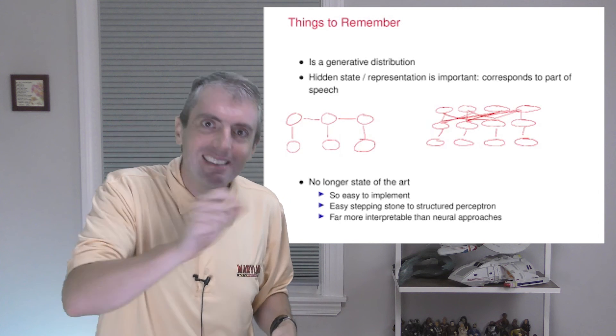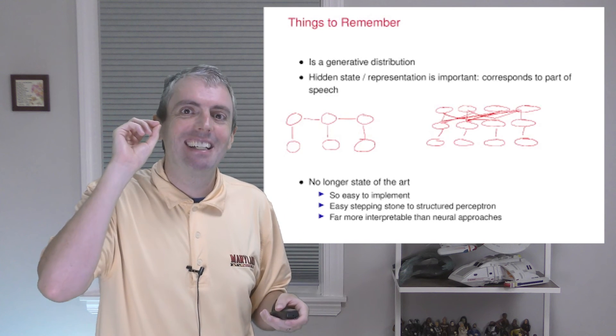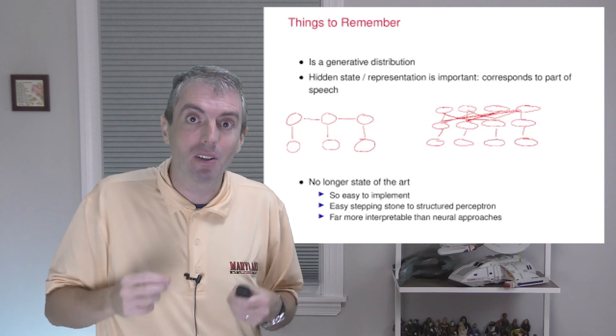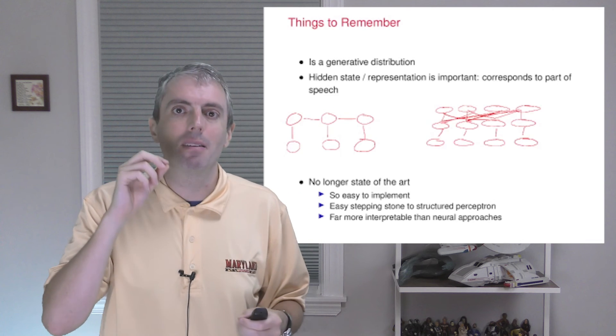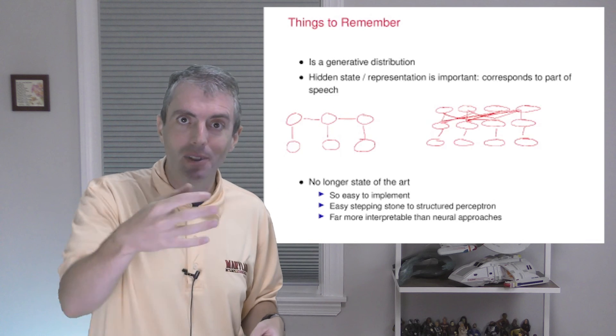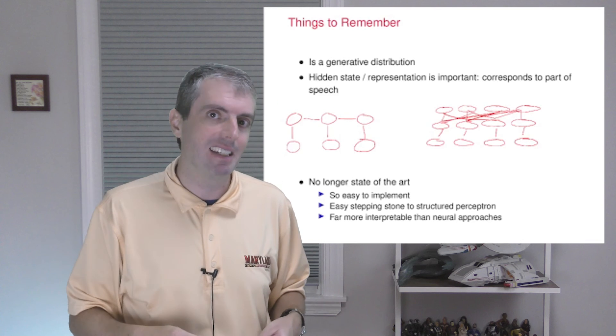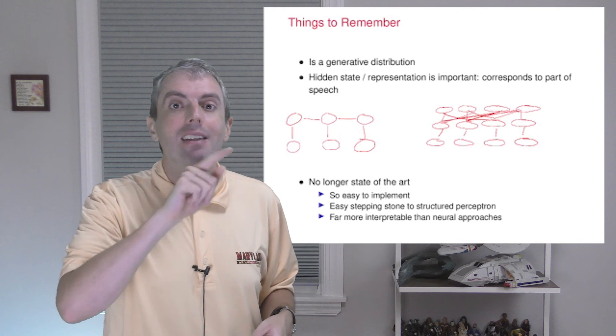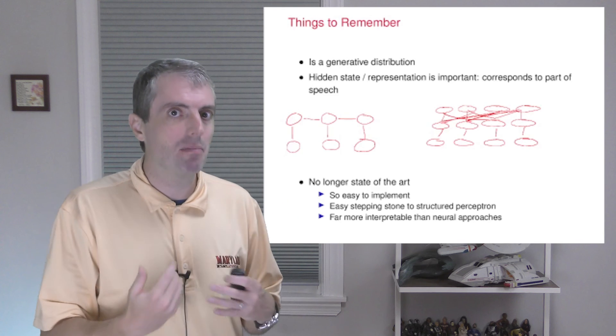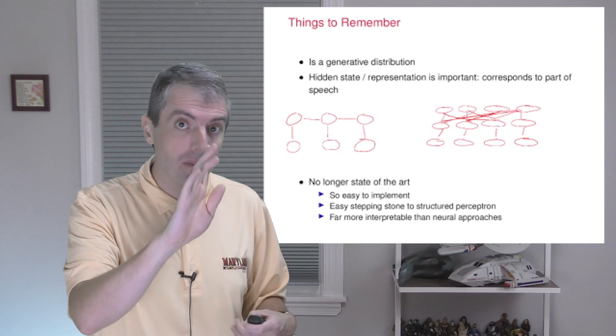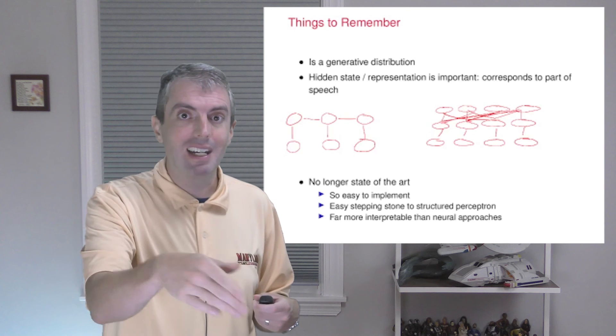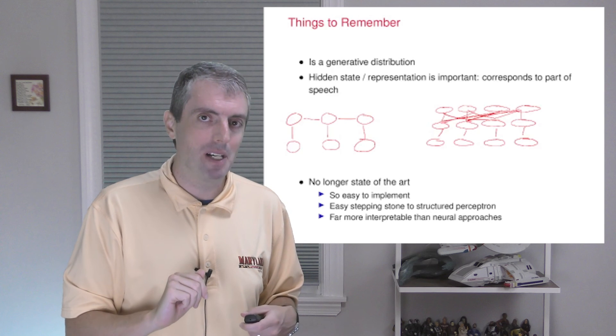But that doesn't mean that hidden Markov models are no longer useful. They are. They're useful for determining the part of speech of a word in a context, particularly when you don't have a lot of training data. And as we'll see, it's quite easy to estimate a hidden Markov model from data. And that intuition will be valuable when you or your data outgrow hidden Markov models.